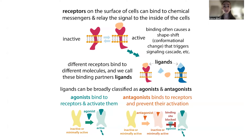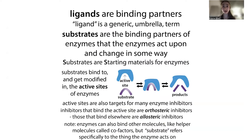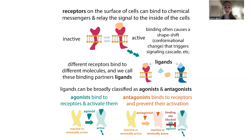These signaling cascades can go through things like G-coupled proteins, interacting with other partners and passing on that signal. Those binding molecules are called ligands — a generic term for binding partners. In the case of receptors, the specific terms are agonist, antagonist, and inverse agonist, and we classify them based on how they affect the receptor.